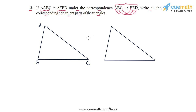So in this second triangle that I have drawn, this vertex here will be F because it corresponds to vertex A. Then this vertex here will be E because it corresponds to B, and then this third vertex will be D, which corresponds to C in triangle ABC.